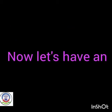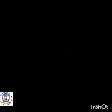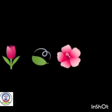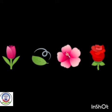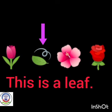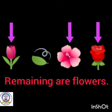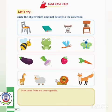Now let's have another picture. Tulip flower, leaf, hibiscus flower, rose flower. The right answer is leaf because this is a leaf and the remaining are flowers.